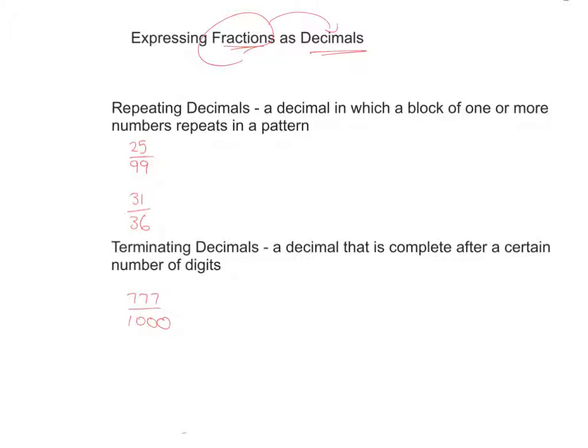The first thing I need to introduce you to is something we call repeating decimals. These are decimals in which a block of one or more numbers repeats over and over again. I've got a couple examples here for you. 25 over 99, so 25 99ths. If we wrote that as a decimal, it would look like 0 decimal 25, 25, 25, 25.